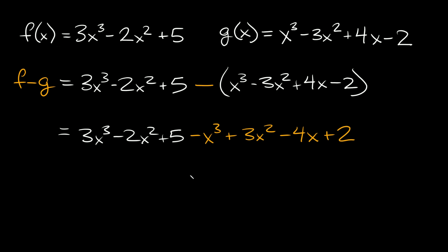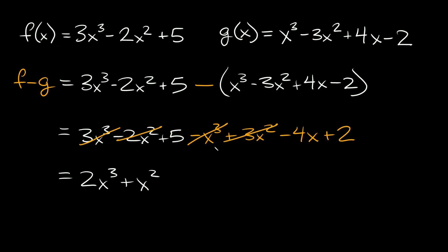Now we can just combine like terms. We have 3x cubed and negative x cubed, which gives positive 2x cubed. Then for the squared terms, positive 3x squared minus 2x squared gives plus x squared. Then we have negative 4x by itself, and 5 plus 2 is 7, so plus 7. So the simplified answer is 2x cubed plus x squared minus 4x plus 7.